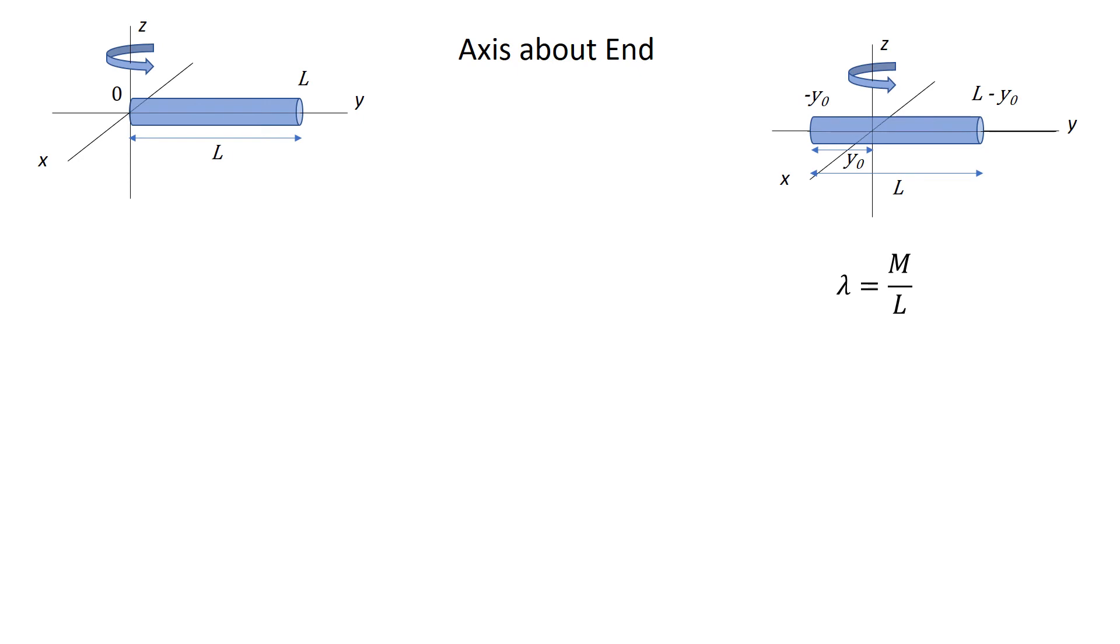The first specific case that is commonly seen is the moment of inertia of a rod rotating about its endpoint, so in this case the left end I'm putting at zero, the right end is at capital L on the y axis, and we're rotating about the endpoint.